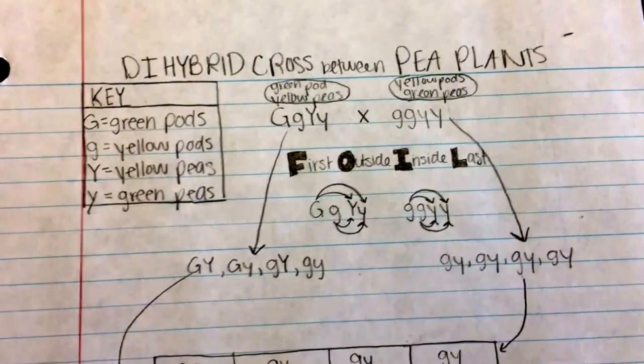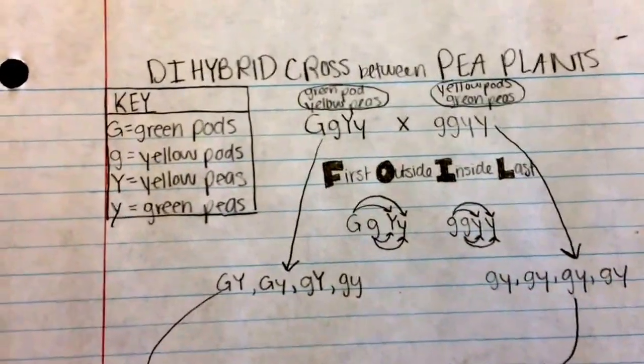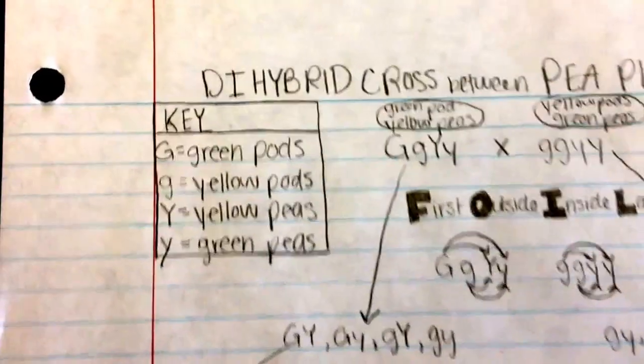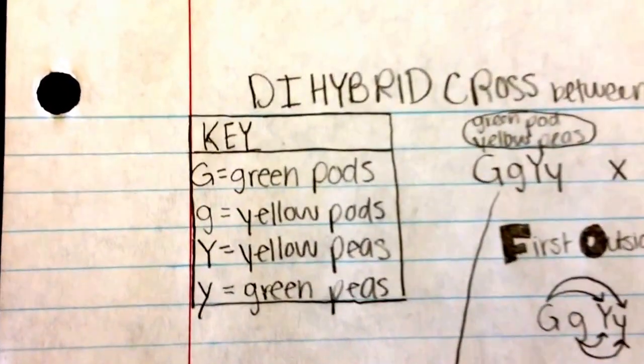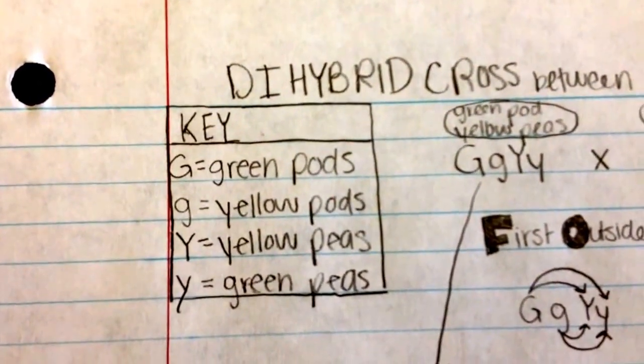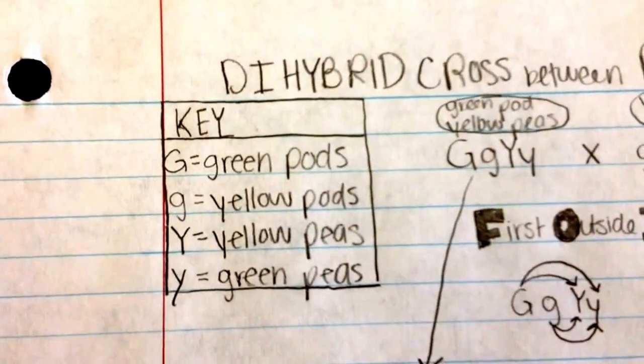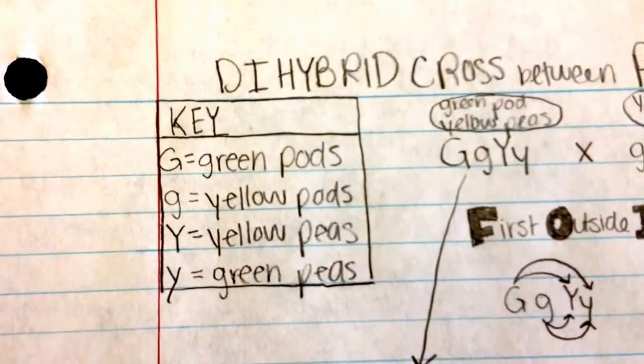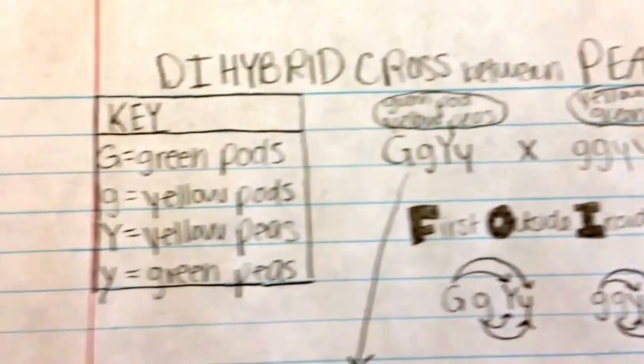This test crosses between two pea plants. Each big G stands for green pods, little G stands for yellow pods, big Y stands for yellow peas, and little Y stands for green peas.